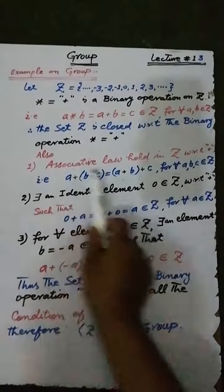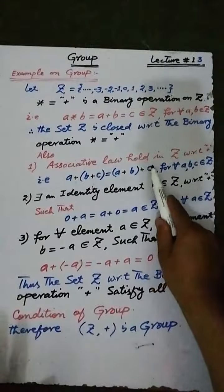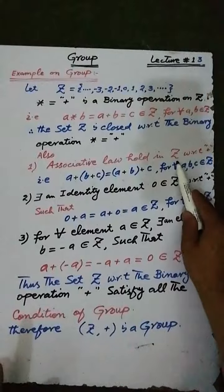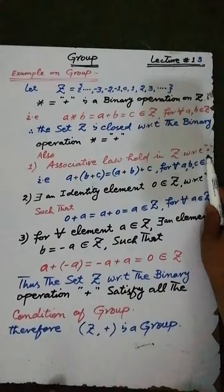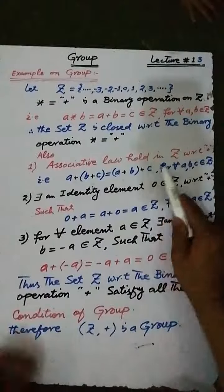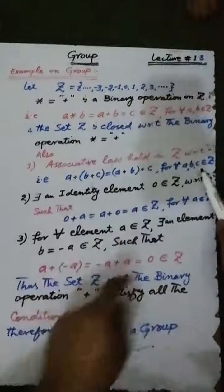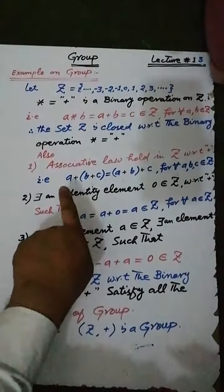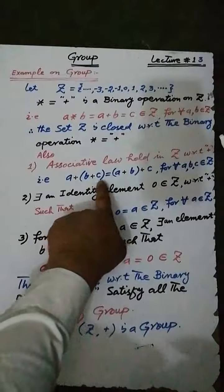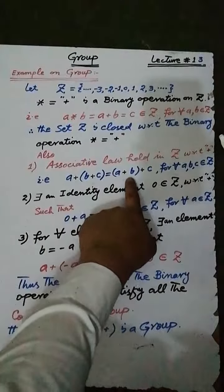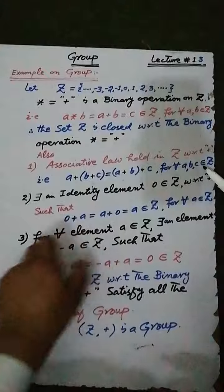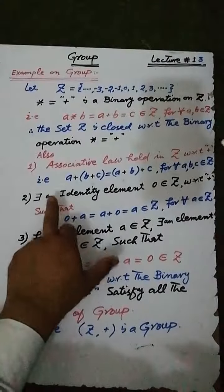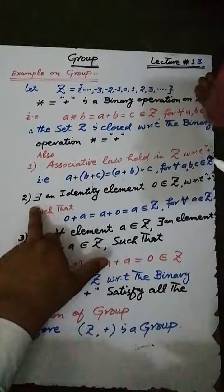Also, the associative law holds in the set z of all integers with respect to the binary operation addition. That is, for any three elements a, b, c belonging to z: a plus (b plus c) is equal to (a plus b) plus c, for each a, b, c belonging to z.